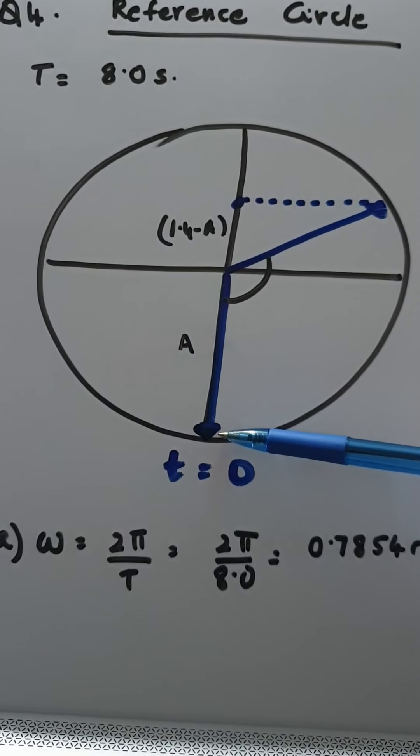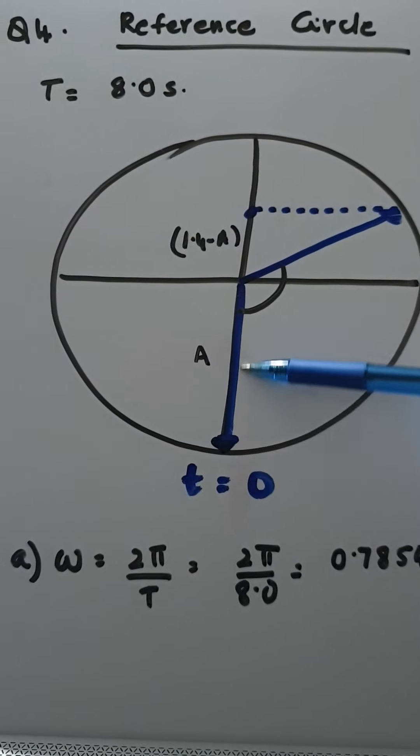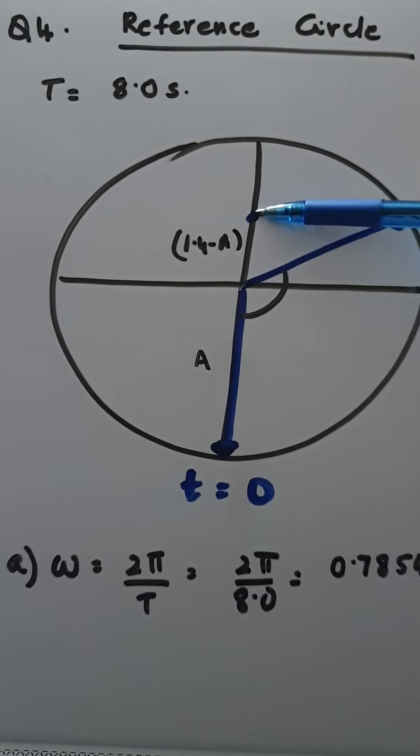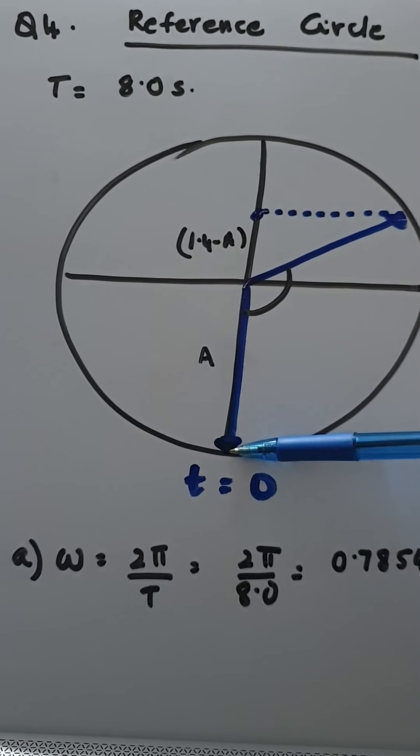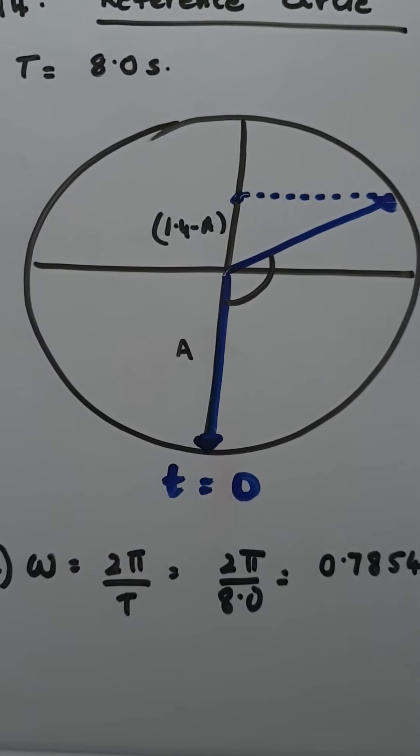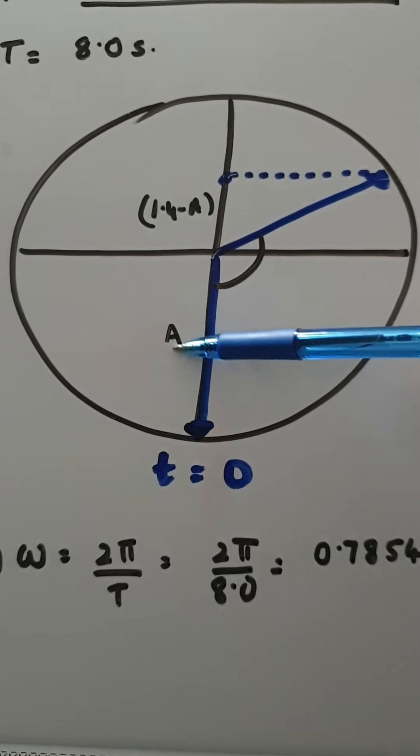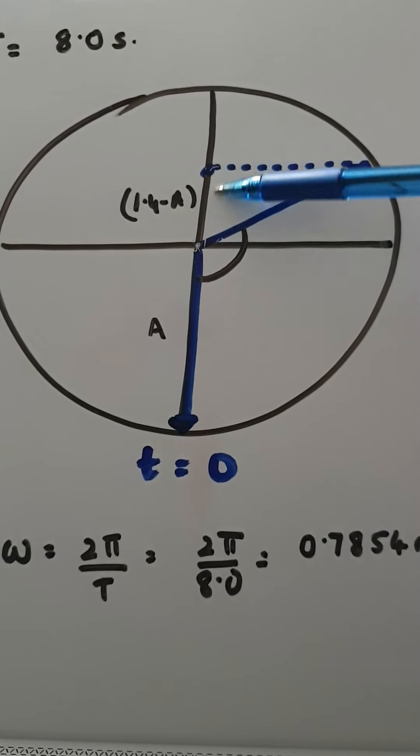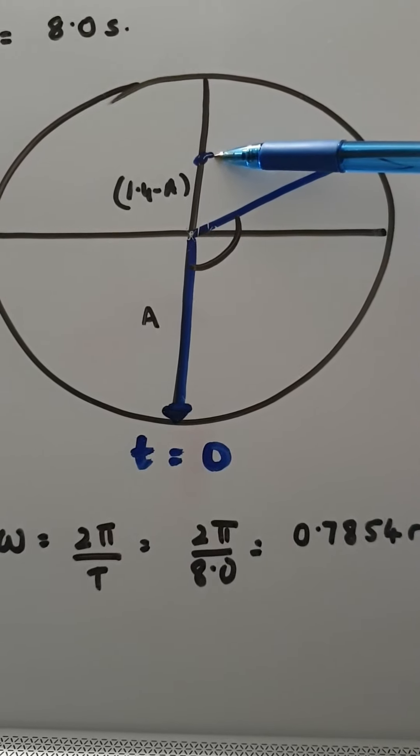So it says it takes 2.5 seconds to go from the bottom to somewhere. So if it's going to take 2 seconds to go to here it's going to go above the equilibrium and that's how far it goes in 2.5 seconds and the distance it goes from the bottom to here is 1.4 meters. The distance from the bottom to equilibrium is the amplitude and then the distance from the equilibrium this extra bit is 1.4 minus A because this whole distance is 1.4.